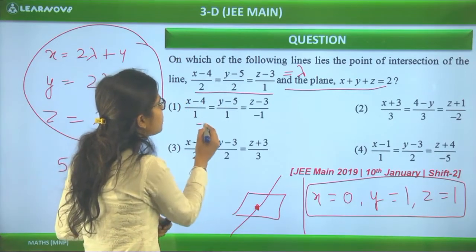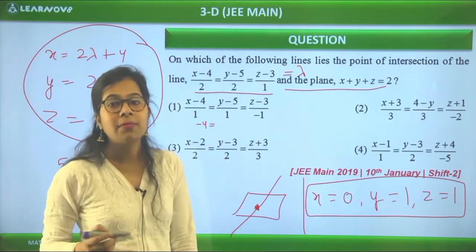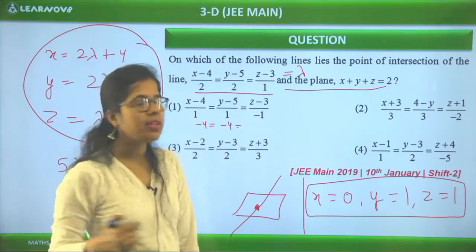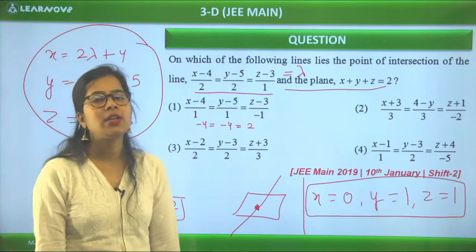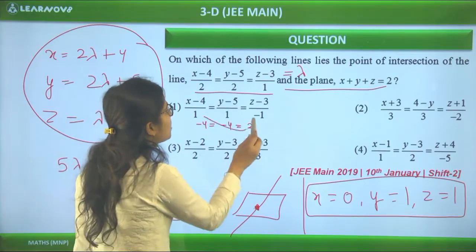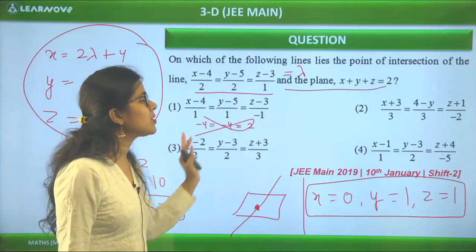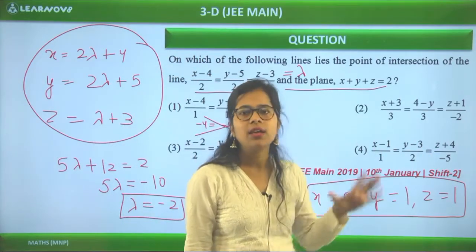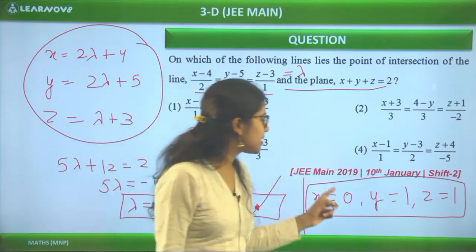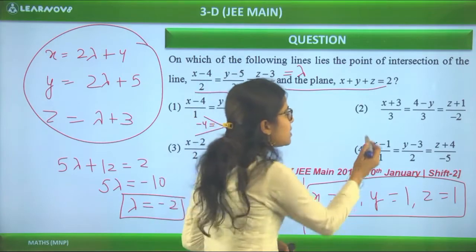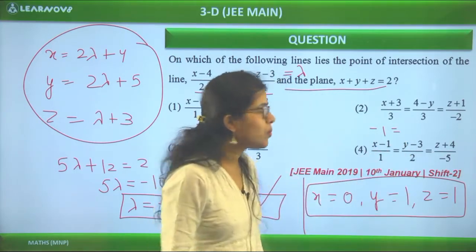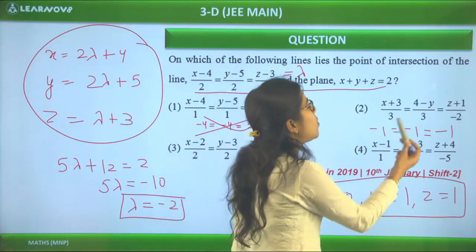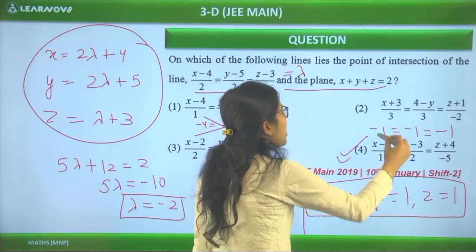Checking option 1: putting x = 0 gives (0-4) = -4, y = 1 gives (1-5) = -4, these two are equal. Then z = 1 gives (1-3)/(-1) = 2, which is not equal to -4, so this option doesn't work. Checking option 4: x = 0 gives (0-1)/1 = -1; y = 1 gives (1-3)/2 = -1; z = 1 gives (1+4)/(-5) = -1. All three are equal to -1, so the fourth option is the line on which the intersection point lies.